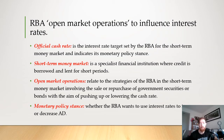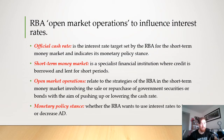The monetary policy stance refers to whether the RBA wants to use interest rates to increase or decrease aggregate demand — they can have an expansionary or contractionary stance. At 0.25%, which is the current cash rate, policy is considered expansionary. So most of the time in recent contemporary economics, we have an expansionary monetary policy stance because the RBA is trying to stimulate the economy through lowered interest rates.